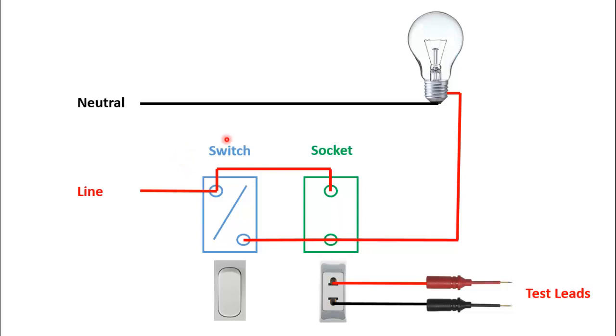I will repeat the connection again. Connect the neutral to the neutral terminal of this bulb holder. Then connect the phase to the switch and the same terminal with one end of the socket. The other terminal of the switch will be connected to the socket and then it will connect to the phase terminal of the bulb holder. So this will complete our circuit.